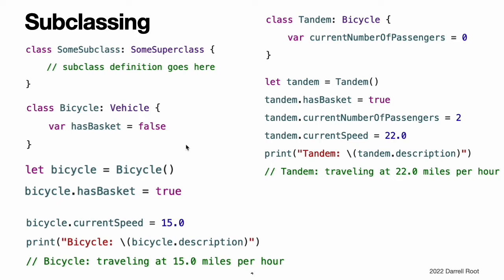By default, any new Bicycle instance you create will not have a basket. You can set the hasBasket property to true for a particular Bicycle instance after that instance is created. You can also modify the inherited currentSpeed property of a Bicycle instance and query the instance's inherited description property. Subclasses can themselves be subclassed. The next example creates a subclass of Bicycle for a two-seater bicycle known as a Tandem. Tandem inherits all of the properties and methods from Bicycle, which in turn inherits all of the properties and methods from Vehicle. The Tandem subclass also adds a new stored property called currentNumberOfPassengers with a default value of zero. If you create an instance of Tandem, you can work with any of its new and inherited properties and query the read-only description property it inherits from Vehicle.